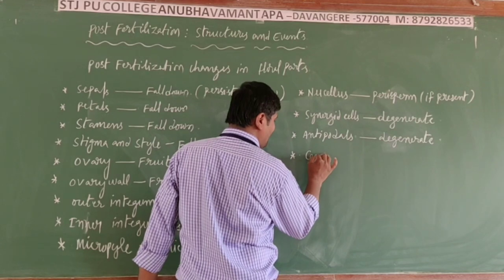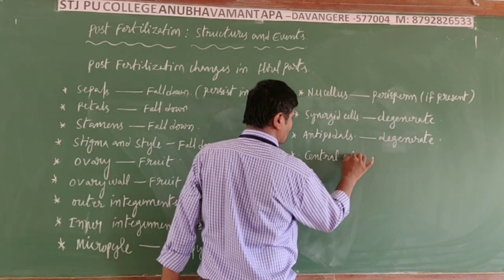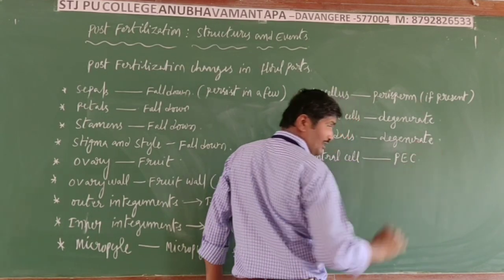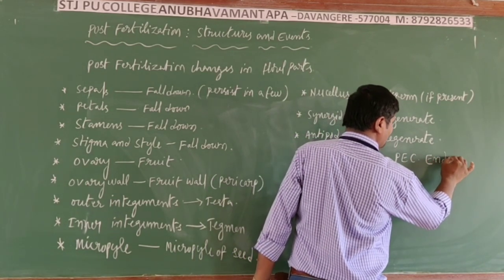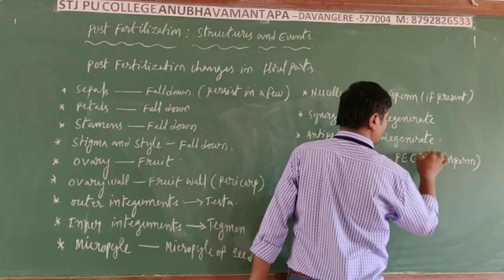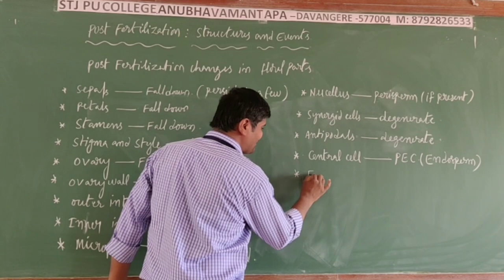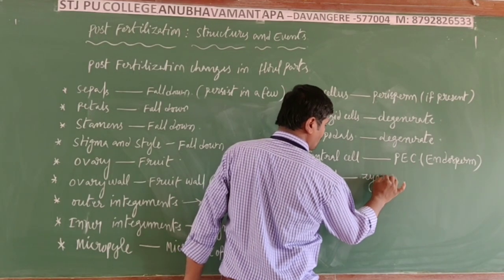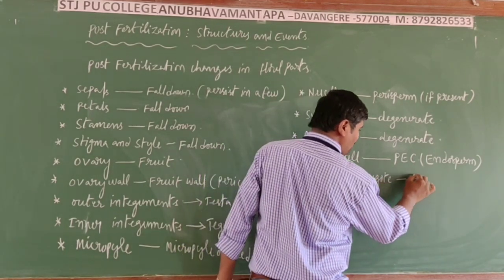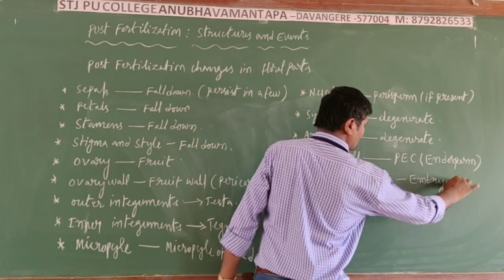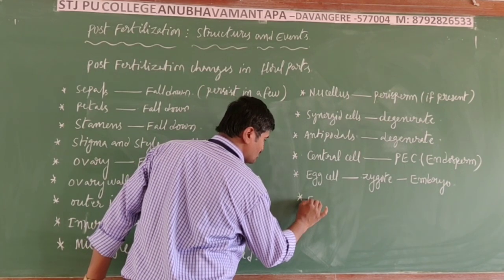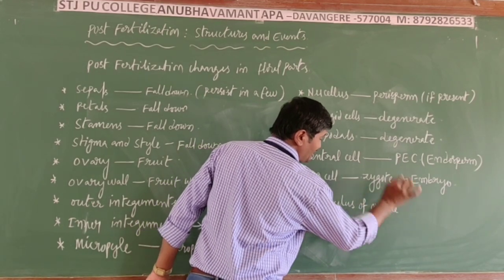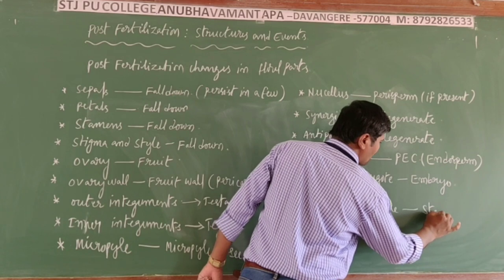The central cell is developed into the primary endosperm cell, that is the endosperm. The egg cell (zygote) is developed into the zygote, and further the zygote is developed into the embryo. The funiculus of the ovule is developed into the stalk of the seed.